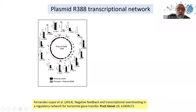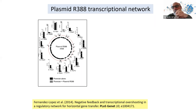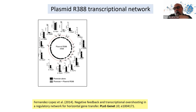The only gene expressed from its promoter is the antibiotic resistance gene. So we have a 34 kb plasmid with about 35 genes, expressing only one — the antibiotic resistance — because all others are shut down during vegetative growth.